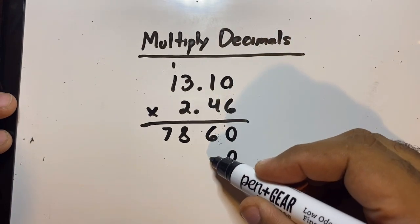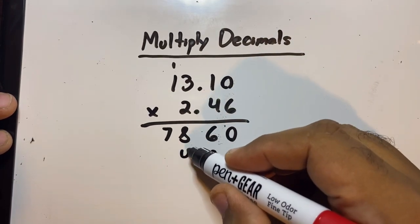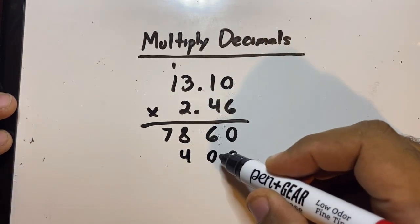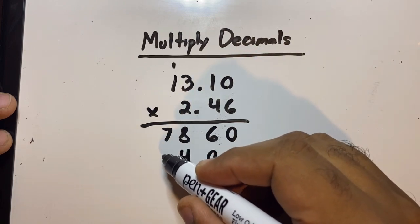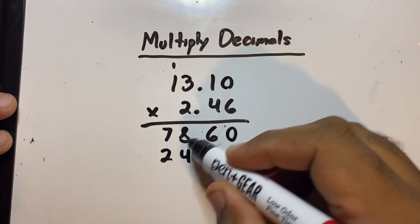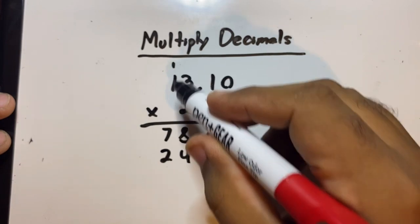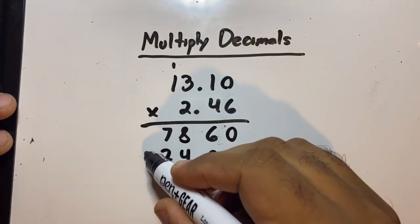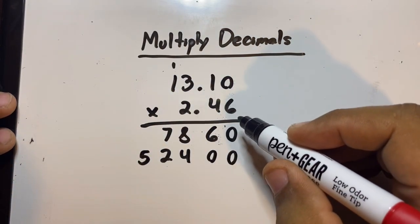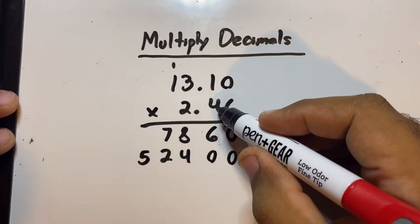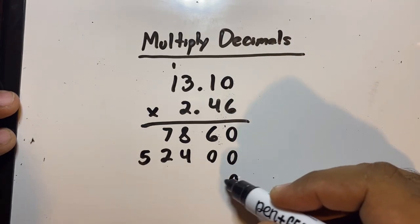Now we're done with the six, so we'll add a zero and move on to four. Four times zero is zero. Four times one is four. Four times three is 12. Four times one, plus the one, is five. We're done with the four and done with the six, so let's add our two zeros here.